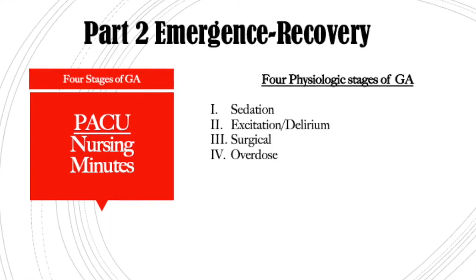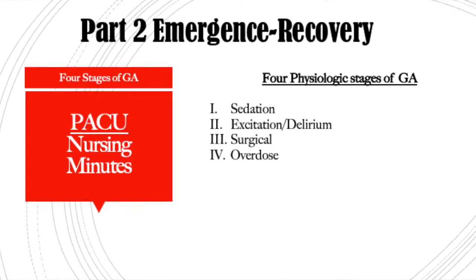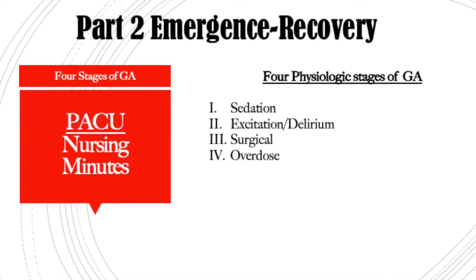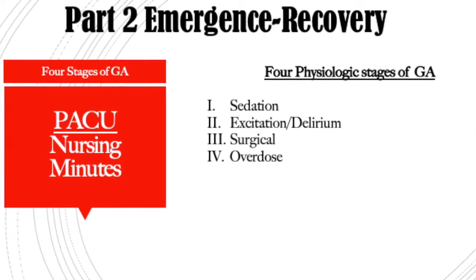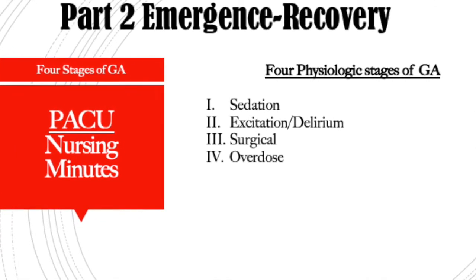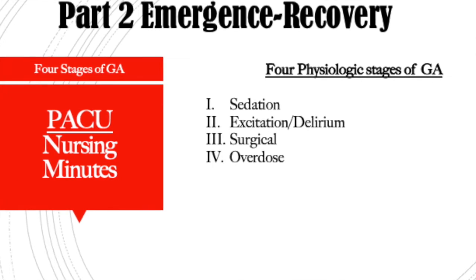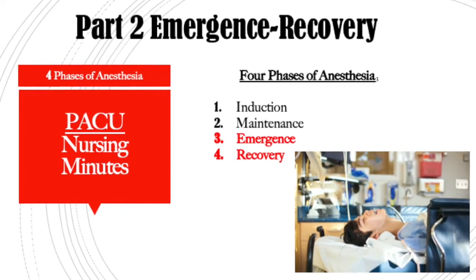There are four physiological phases of general anesthesia: the sedation phase, the excitation delirium phase, the surgical phase, and the overdose phase. Today, as we talk about emergence and recovery, we are going to be watching as our patients go from a surgical level of general anesthesia, come up through the delirium emergence phase, and then become sedated as they recover and come back through consciousness.